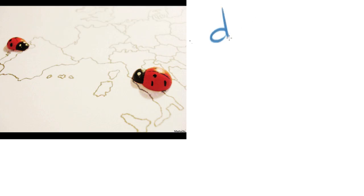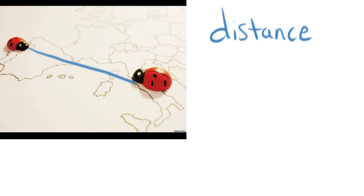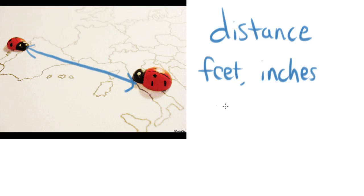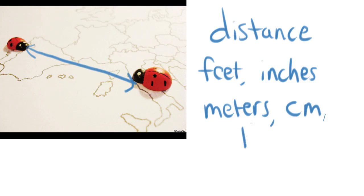The first word we're going to look at today is distance. Distance is simply the separation of any two objects. So you have two ladybugs here — their separation between the two of them is the distance between the two of them. Units can be in the English system — we can use feet or inches — but in physics we typically use the metric system: meters for shorter distances, centimeters for very small distances, and kilometers for very large distances.